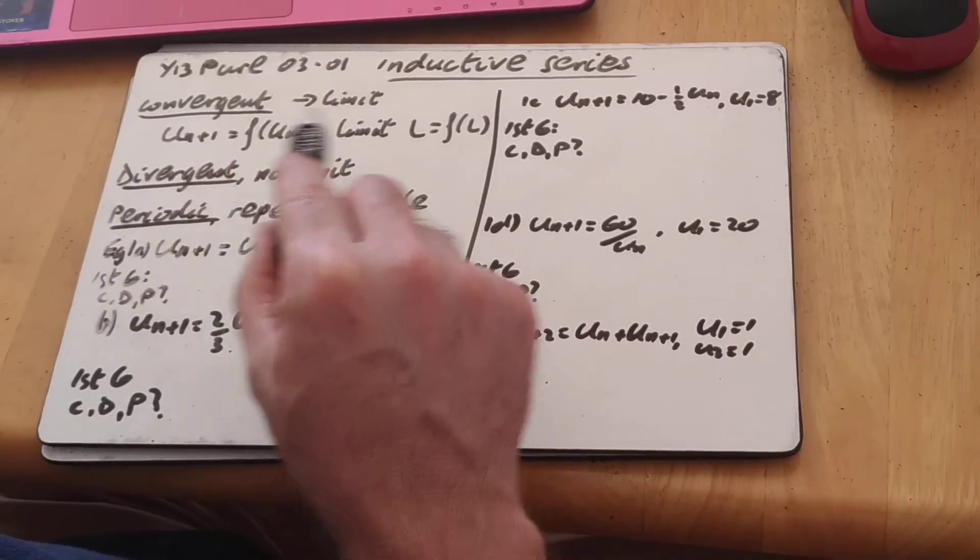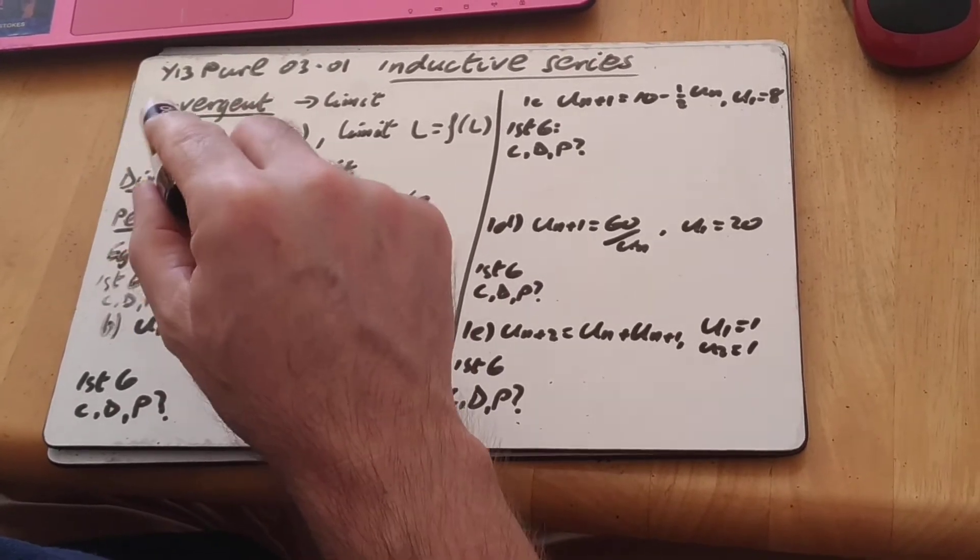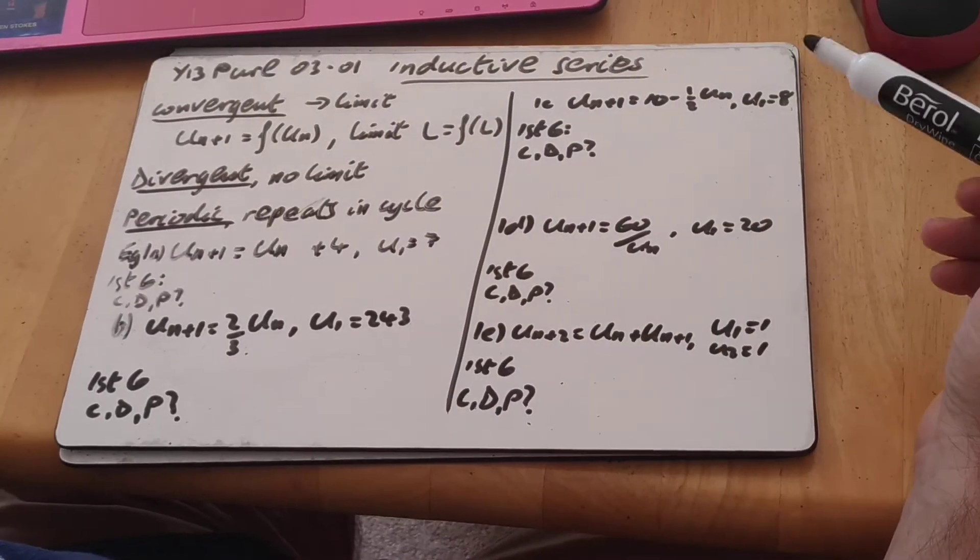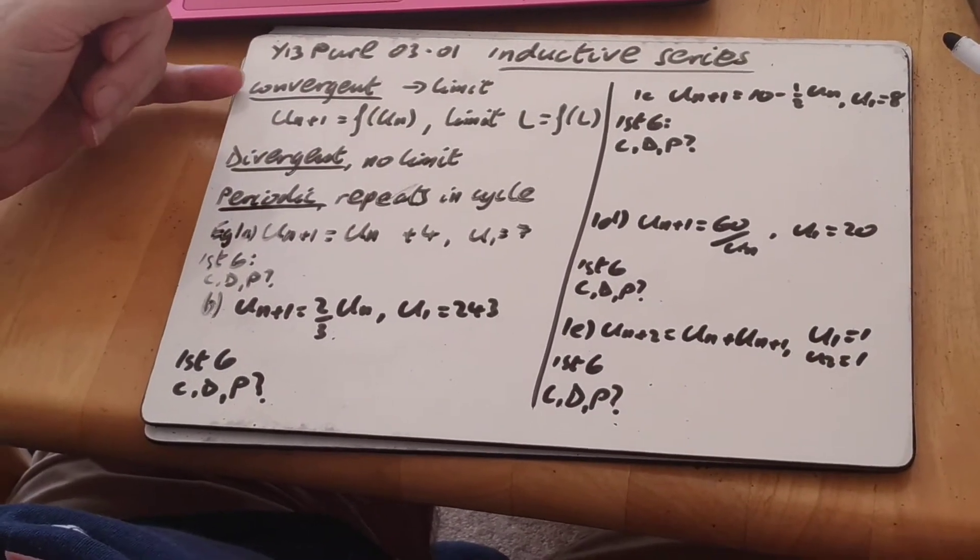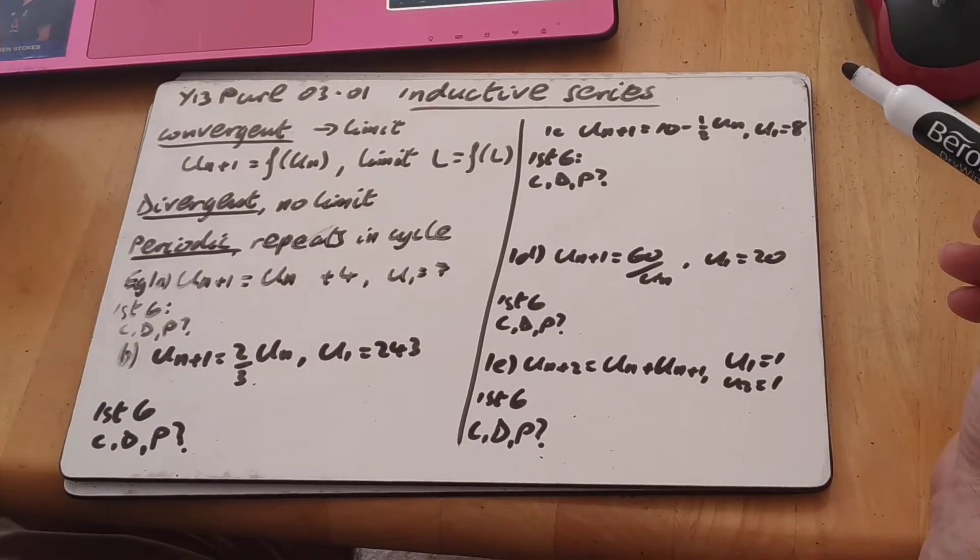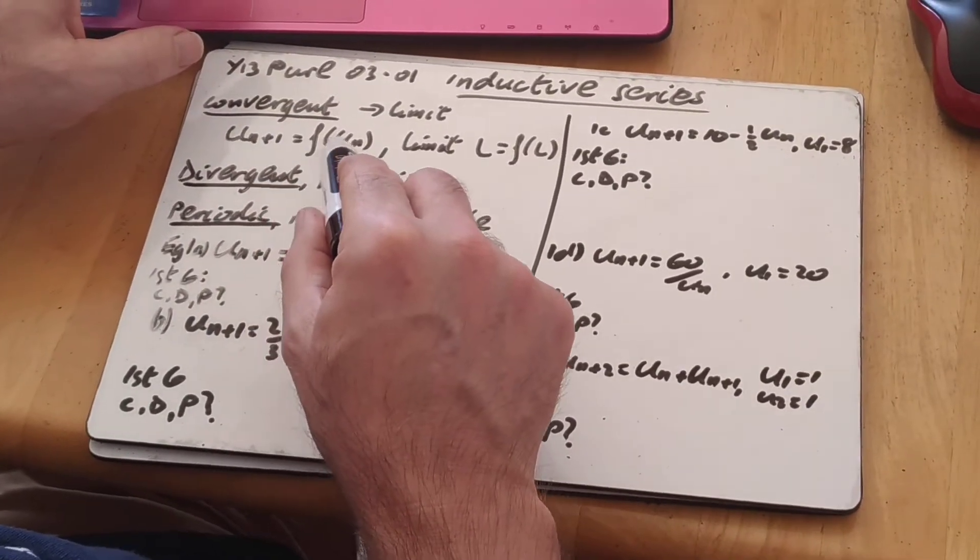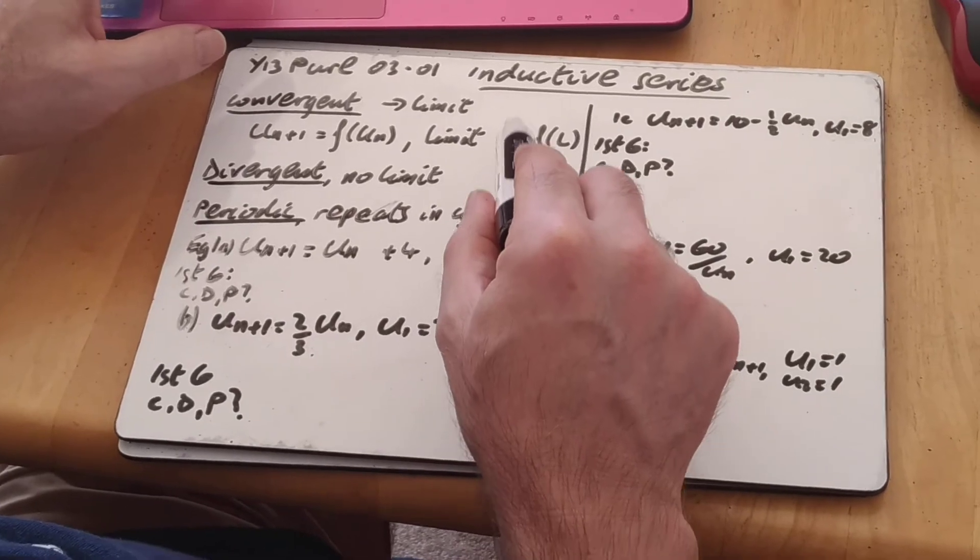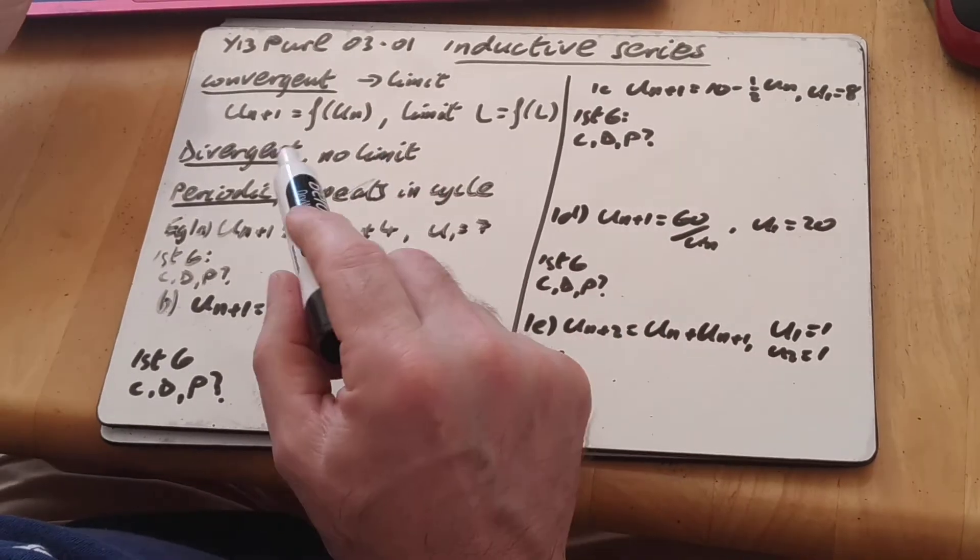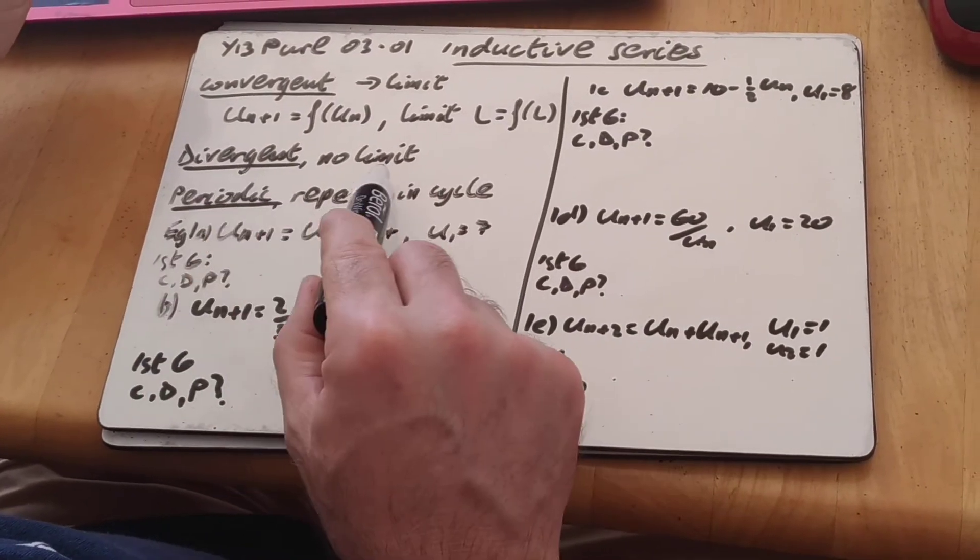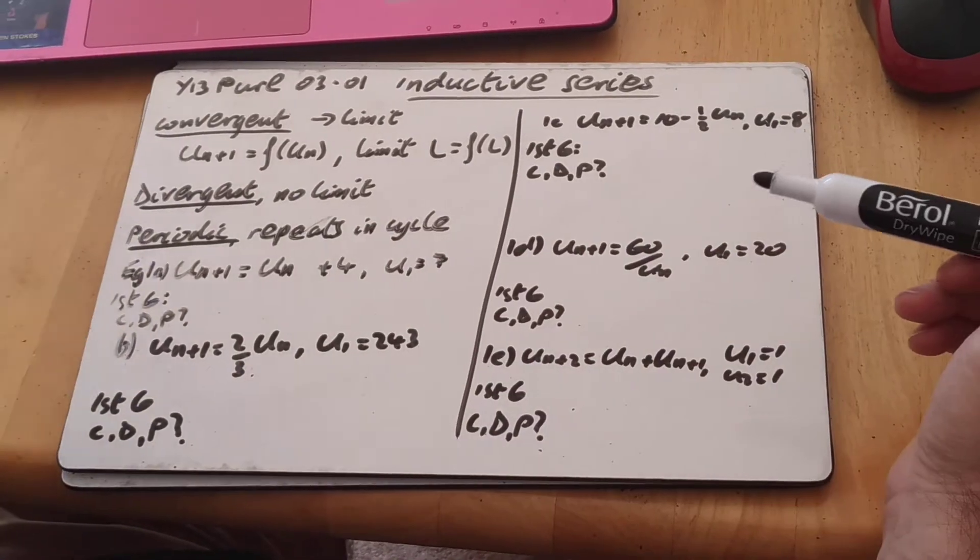It's where we are given a term or terms at the start, and then given a link between the next term and the one or two that's gone before. So we're also going to have particular types of series we're interested in, ones that are convergent, which go to a limit. We've then got divergent series where there's no limit at all, and periodic, which are ones that repeat a particular cycle. Let's have a look at a few examples then.